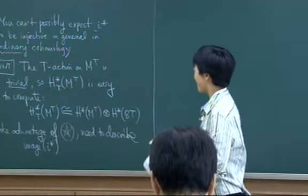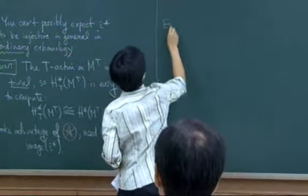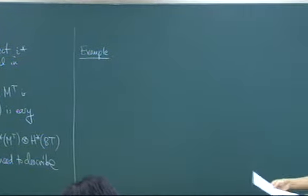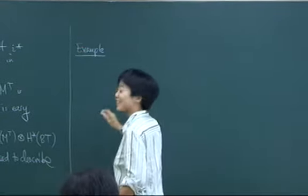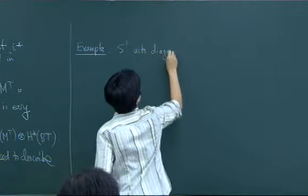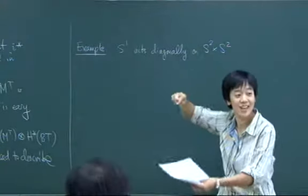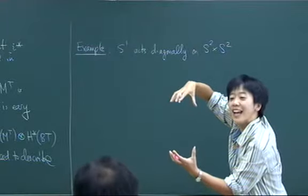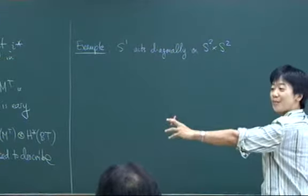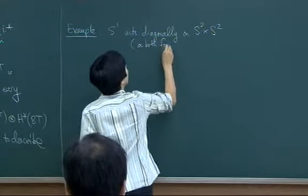Before I go on, let me write down one example of what kind of pictures you might expect to see later today. So S1 acts diagonally on S2 cross S2. On each piece it is the standard action — I have the round sphere and S1 just twirls around the Z-axis. I give myself two copies, and it's just the diagonal action. S1 acts diagonally on both factors, the standard action.